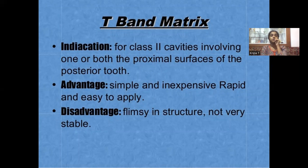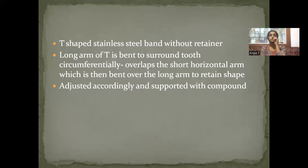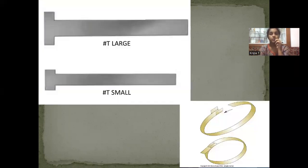T-band matrix: indicated for class 2 cavities involving one or both proximal aspects. It is simple, economical, and easy to apply. Disadvantage: not so stable. There is a T-shaped stainless steel band without a retainer. The long arm of the T is bent to surround the tooth circumferentially so that it overlaps the short horizontal arm, which is then bent over the long arm to retain that circumferential shape. Adjusted accordingly and supported with compound. T-shaped bands are available in two sizes: large and small.